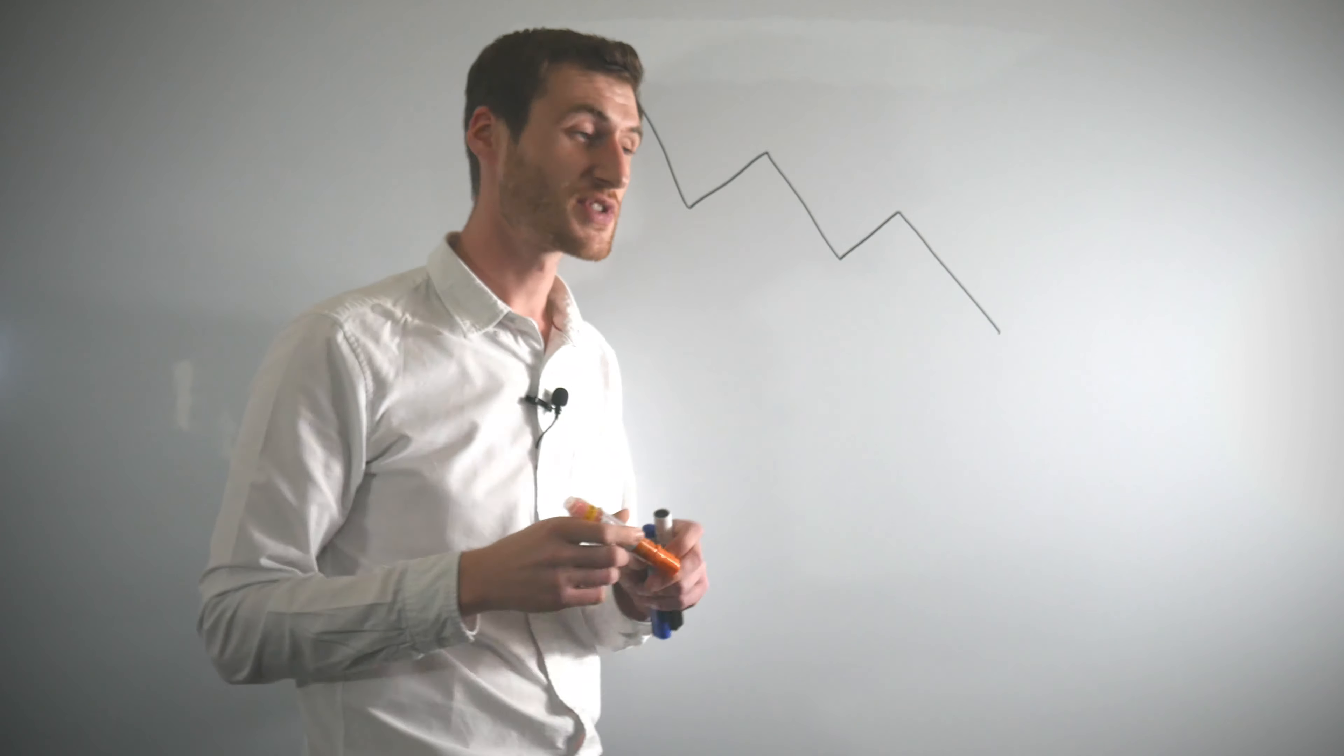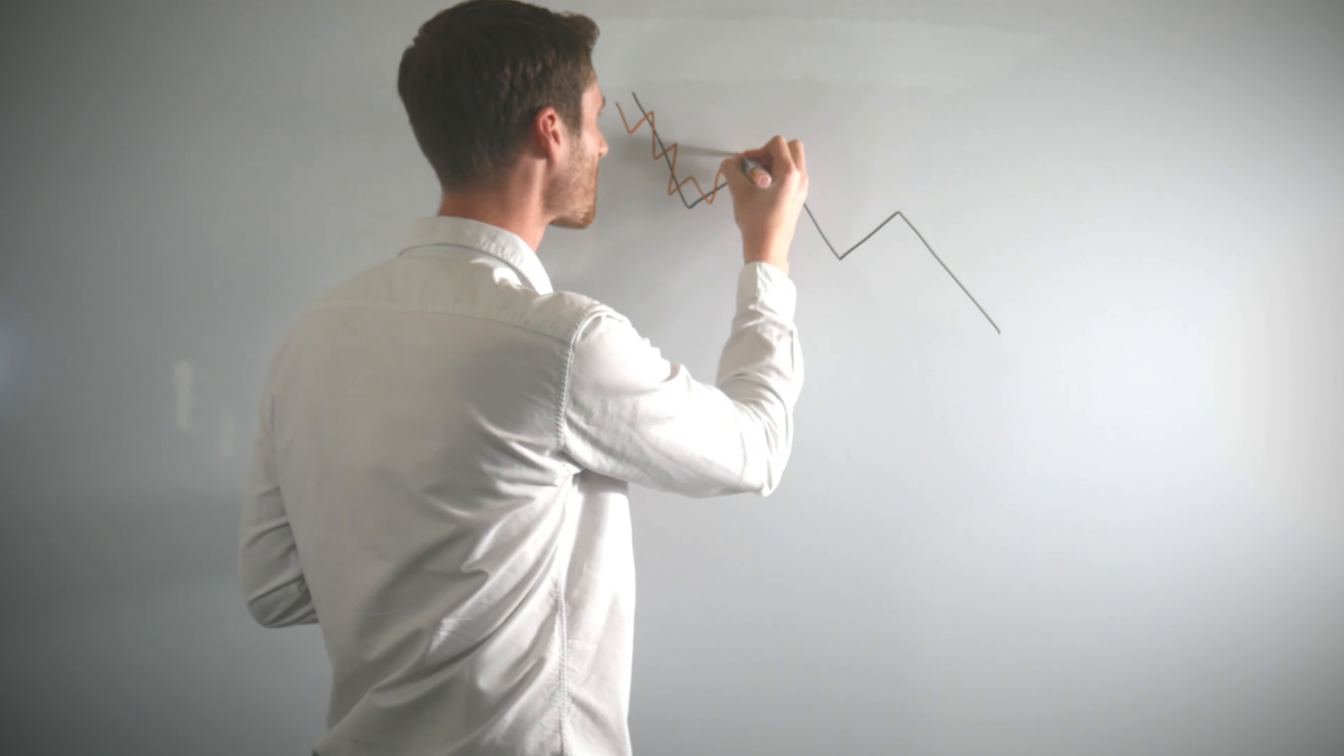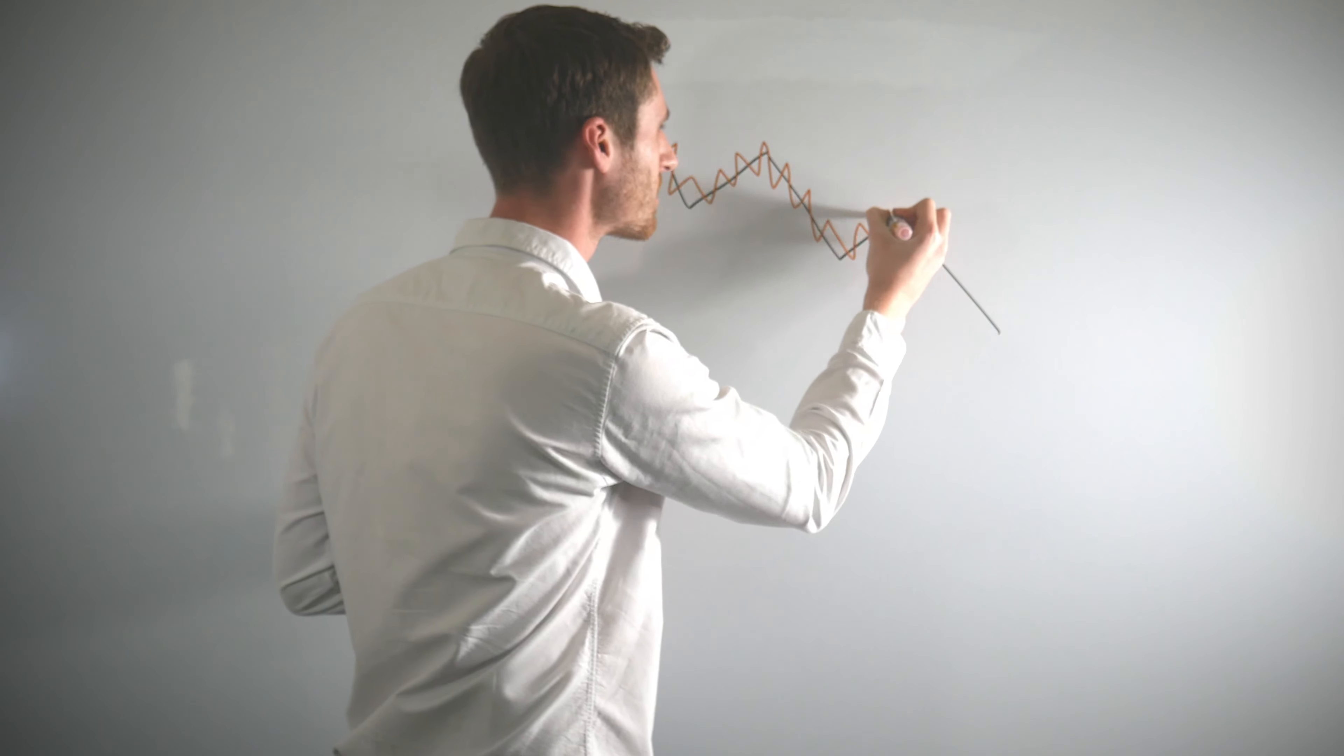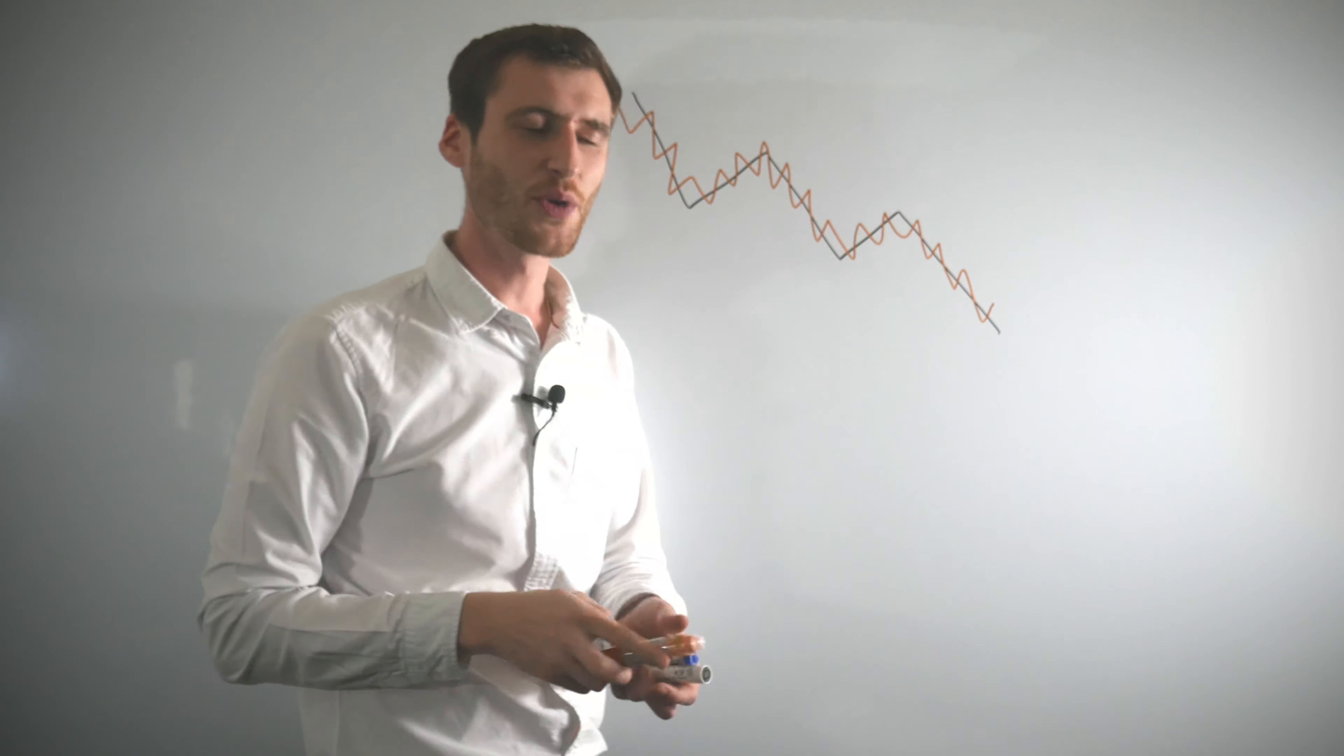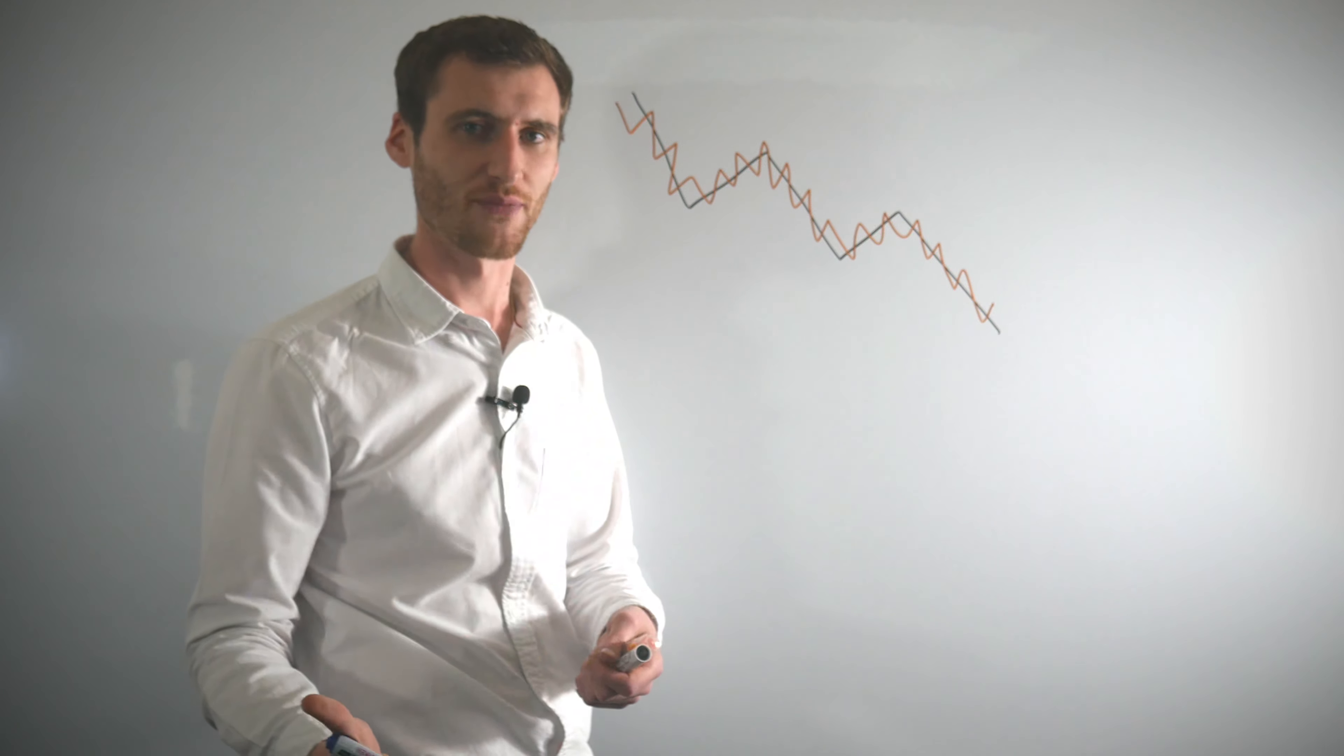Overall guys, we all know on the higher time frames the market flows like this, and on the lower time frames the market flows like this. We know that in black this is how the market flows on the higher time frames, and in orange this is how the market flows on the lower time frames. It's structure within structure.